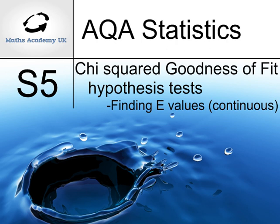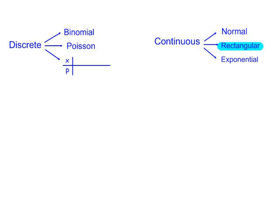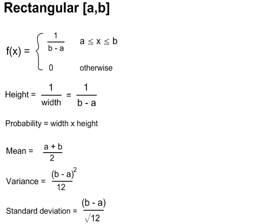Chi-squared goodness-of-fit hypothesis tests: finding the expected frequency values using continuous probability distributions. Our first example looks at a rectangular continuous probability distribution. Some information about the rectangular probability distribution, and some of these are given in the AQA formula book, which are now highlighted.